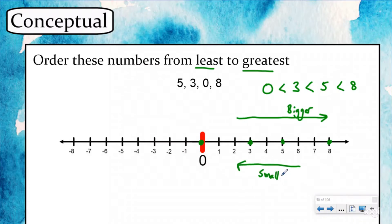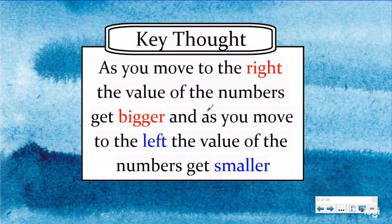The same thing is true with negative numbers — as we move further to the left, the value of those numbers gets smaller and smaller because they're further away from zero. This leads us to our key thought today: as you move to the right, the value of the numbers gets bigger, and as you move to the left, the value of the numbers gets smaller. We have to name it today so we understand what's happening on the number line.